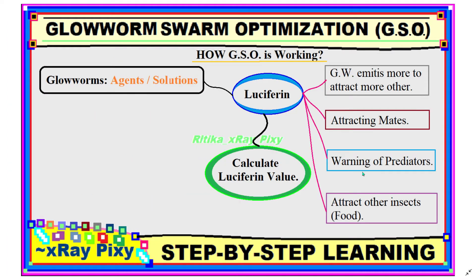Now we will try to understand how this algorithm works. In nature everything is real, but in this case we have virtual glowworms, so we can call them individual agents or solutions. Each virtual glowworm carries luciferin along with them. Luciferin is the organic substance that produces light, and it is also present in fireflies.